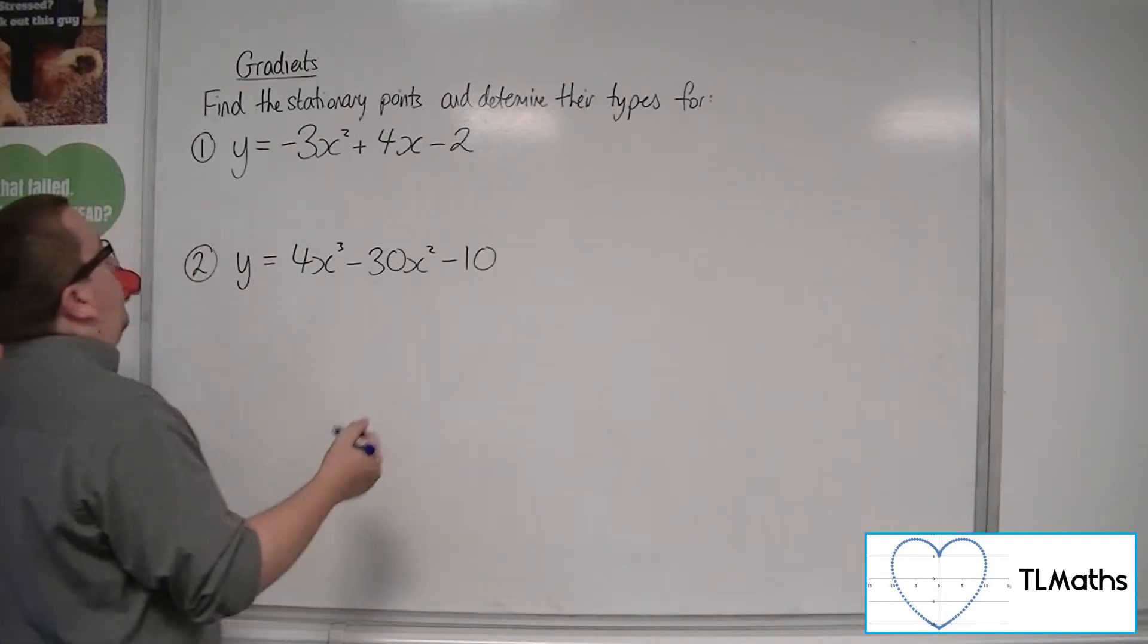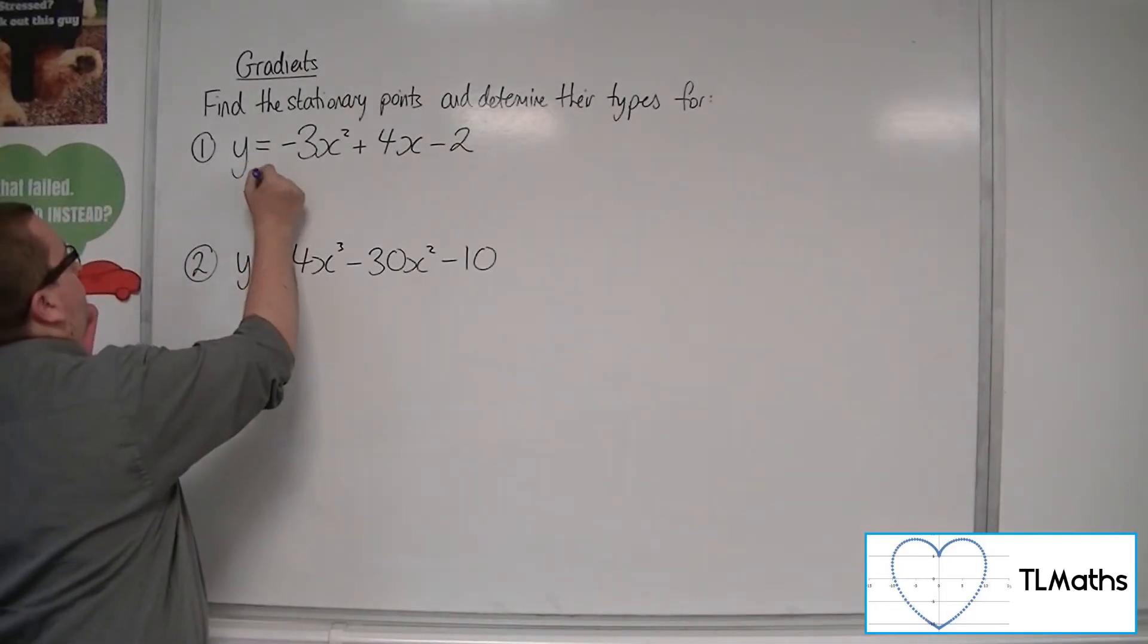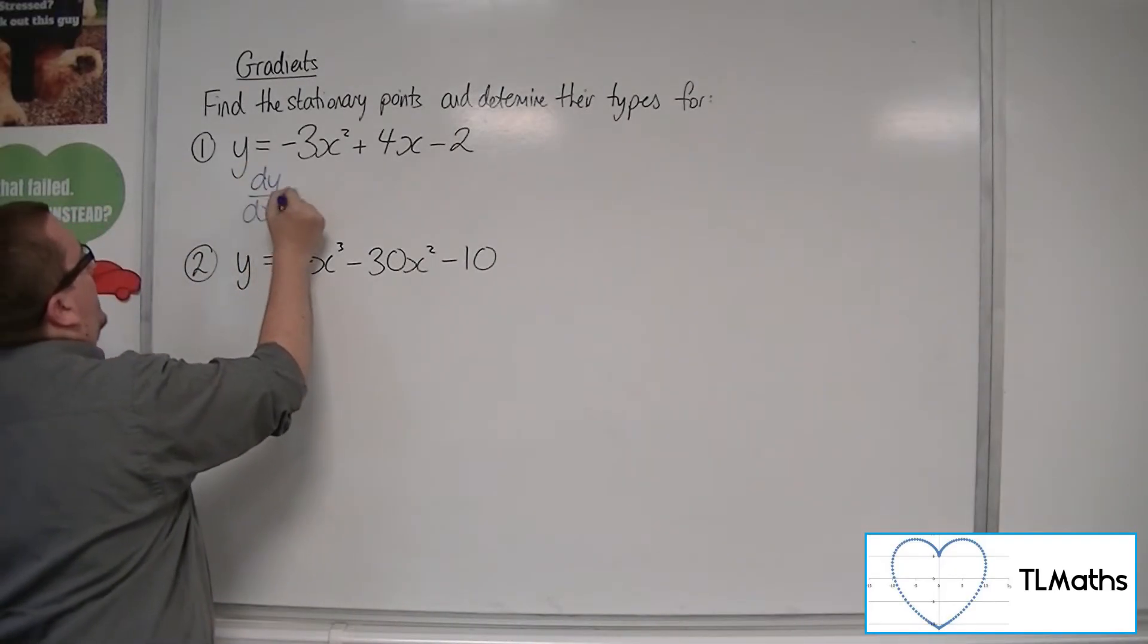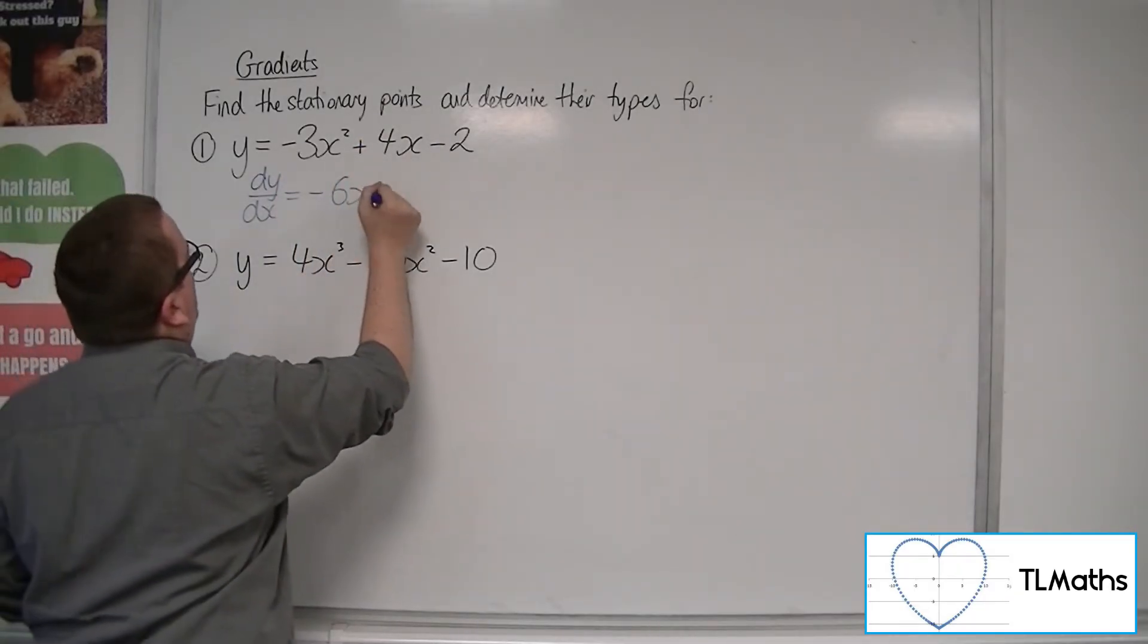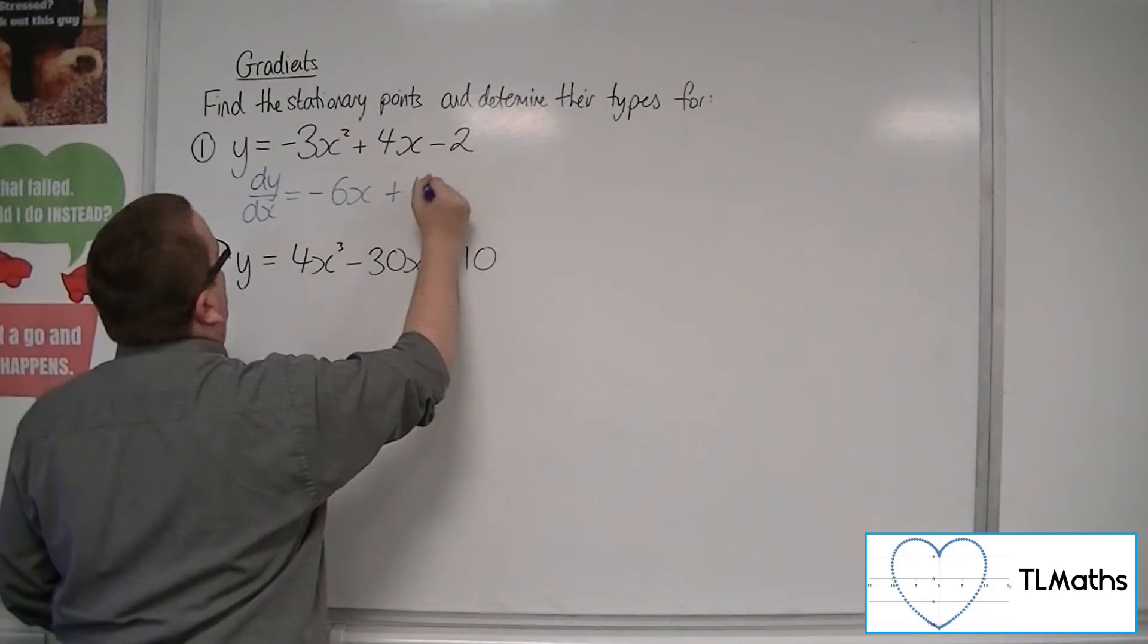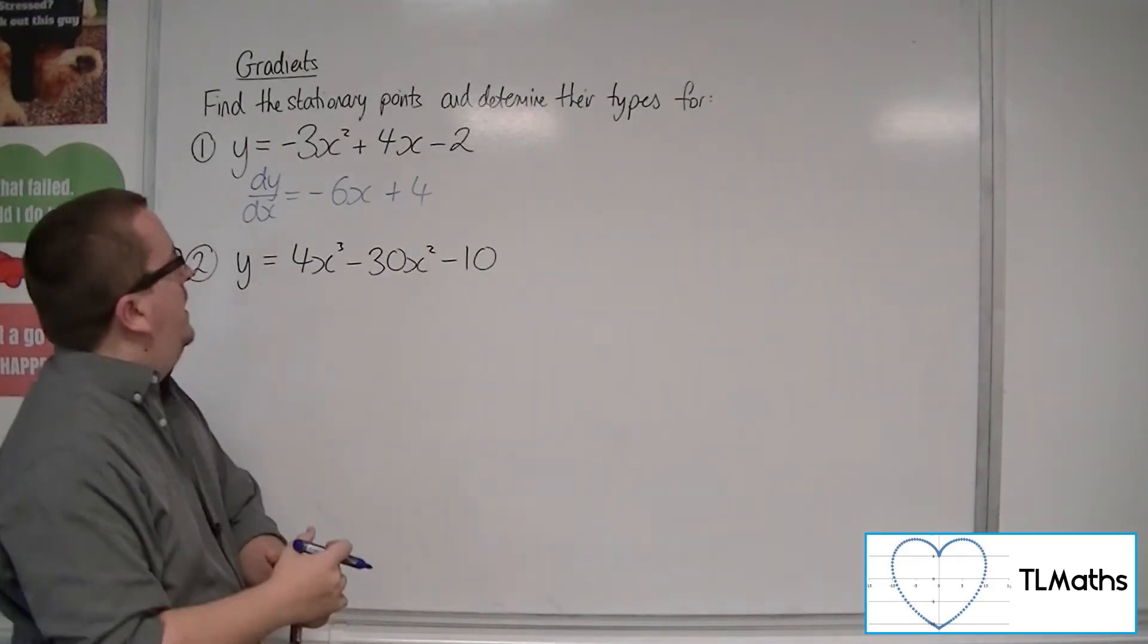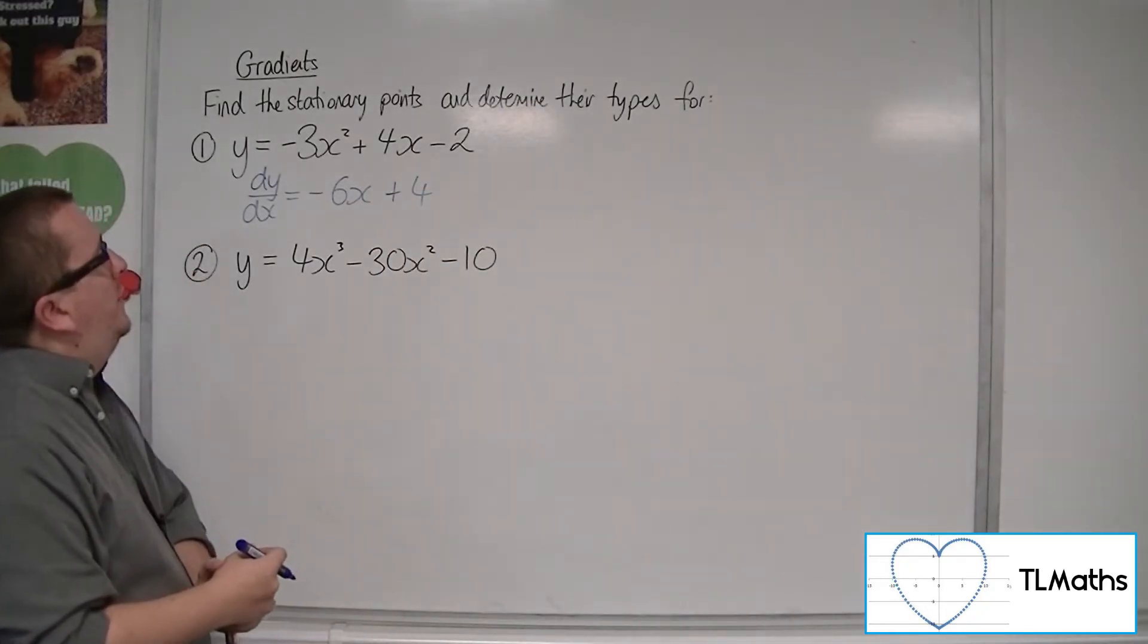So I want to find dy by dx. The 2 multiplies with the minus 3, so minus 6x, and this will become 4, the minus 2 disappears. So dy by dx is minus 6x plus 4.